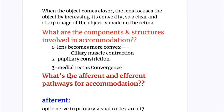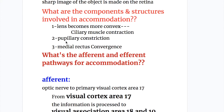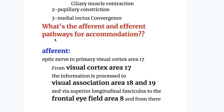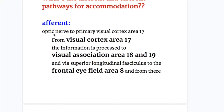The different components and structures involved in accommodation are: number one, the lens becomes more convex, done by ciliary muscle contraction; number two, pupillary constriction, which is different from the pupillary light reflex constriction; and number three, medial rectus convergence. The afferent pathway for accommodation begins with the optic nerve.